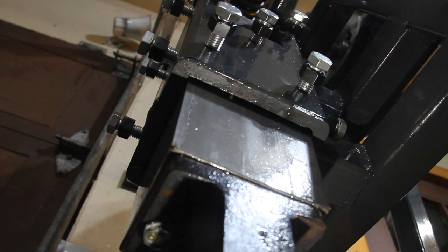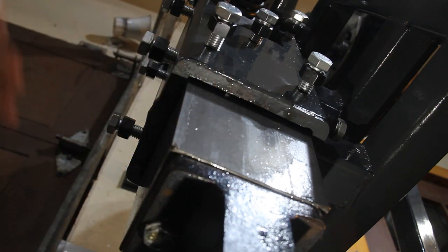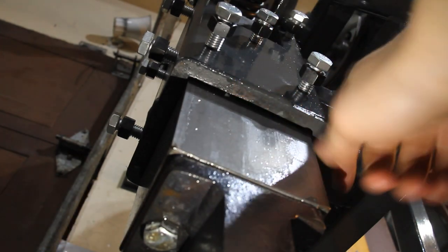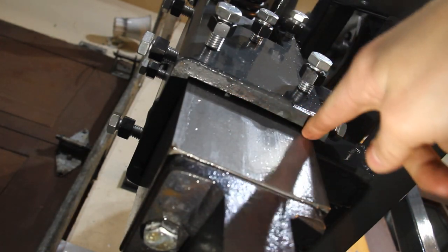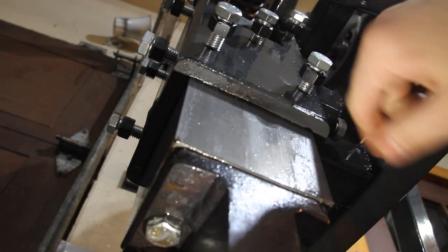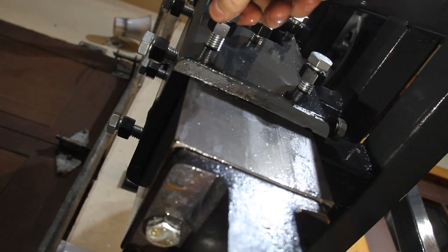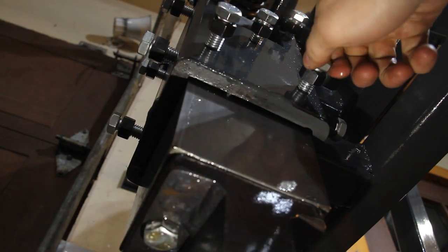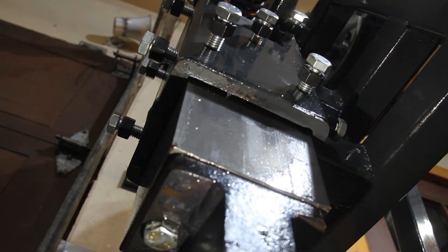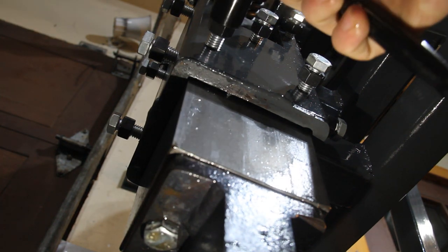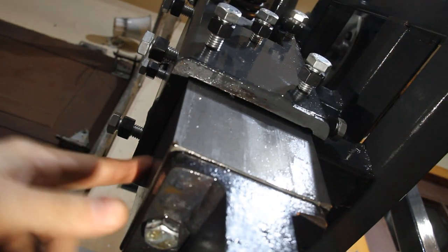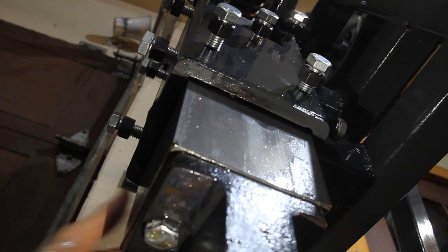So the first step in the adjustment of the ram guide is to make sure that the ram can touch this part here that holds the UHMW plastic sliders in. So as you can see here, the ram is touching this part. So I'll tighten these nuts in order to prevent the ram from touching. If it's no longer touching, I'm good. And I'll do this for all four sides here.